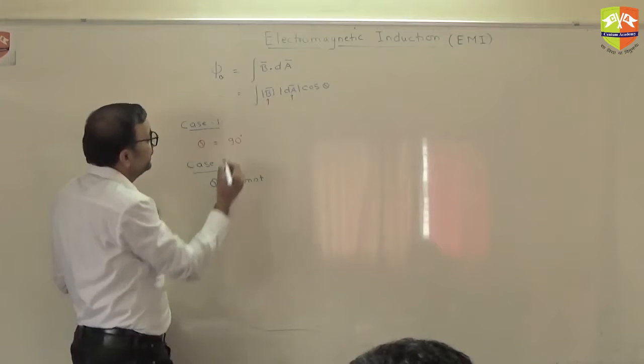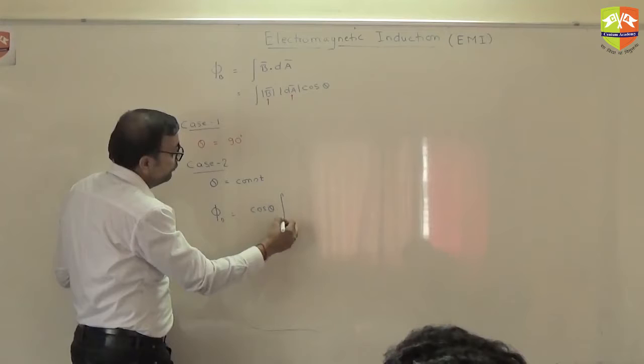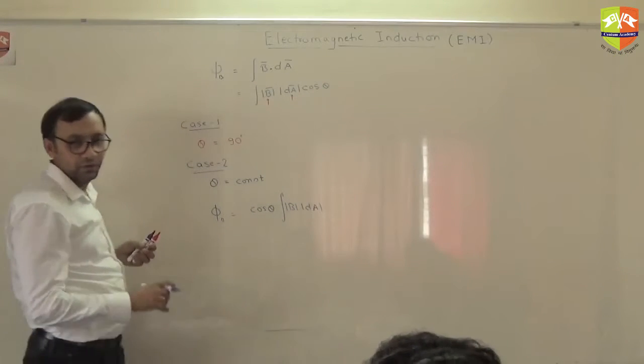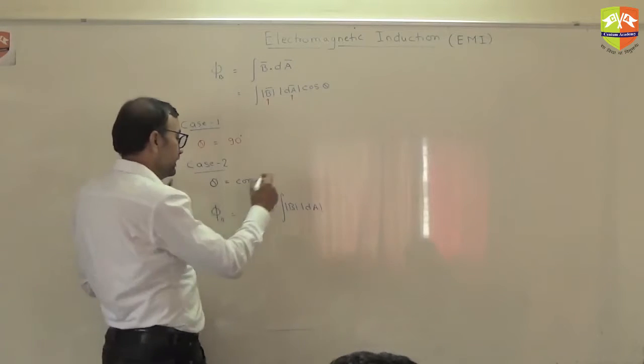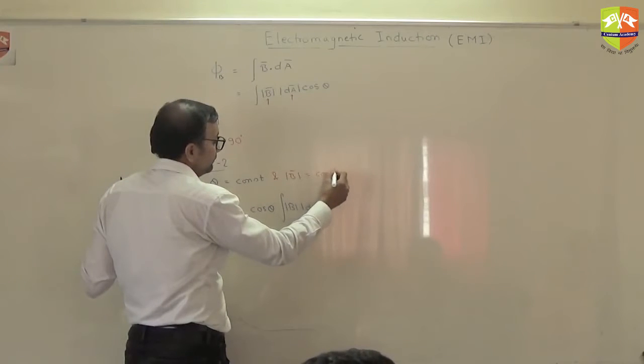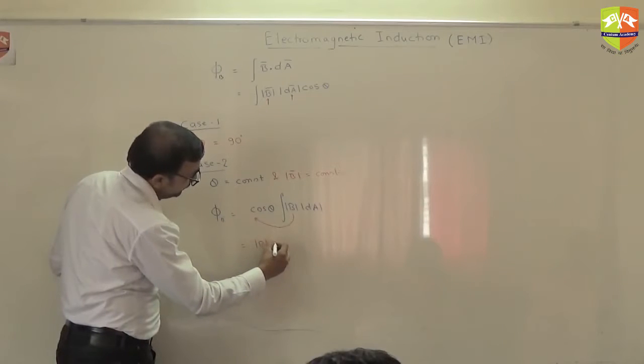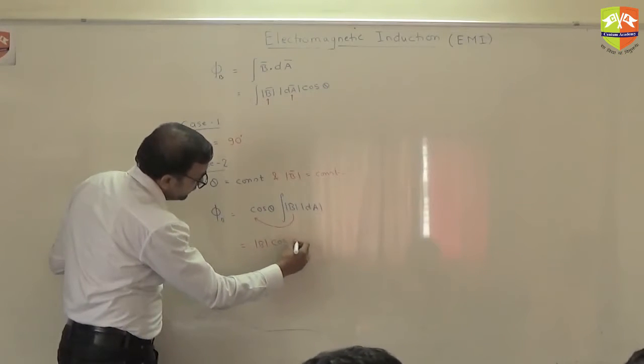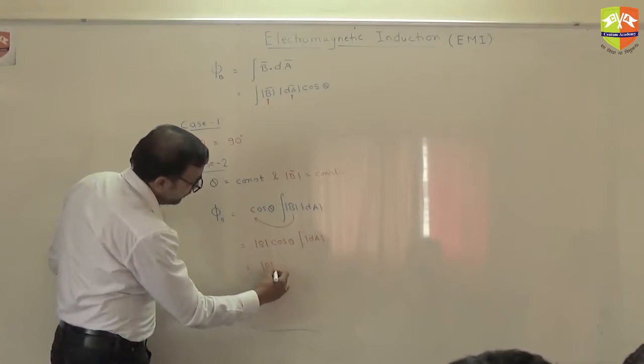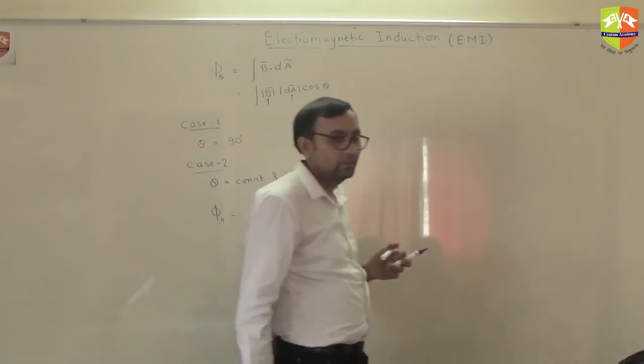If θ is constant, this integral becomes what? Now will you be able to integrate? Can you integrate now? No, still you can't integrate. So θ is constant and magnitude of B should also be constant. Then you can take B out of integral and this thing will become B into cos θ into integral of dA and integral of dA is what, A. B into A into cos θ.